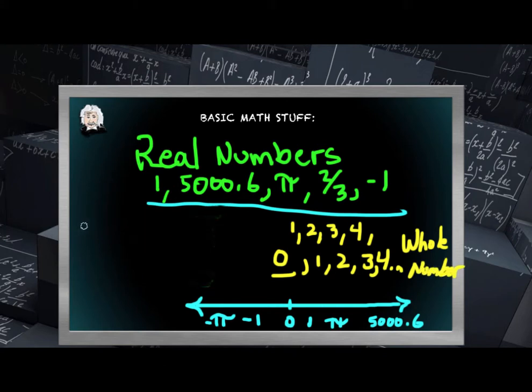Very much like a whole number but slightly different are what we know as integers and again you've probably heard that quite often. How does an integer differ from a whole number?